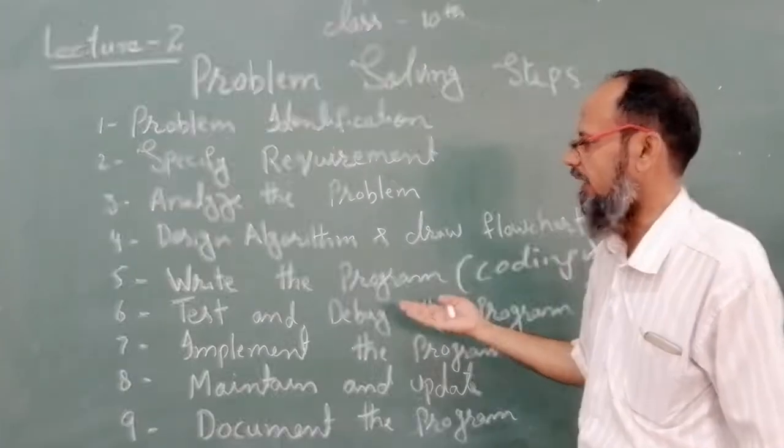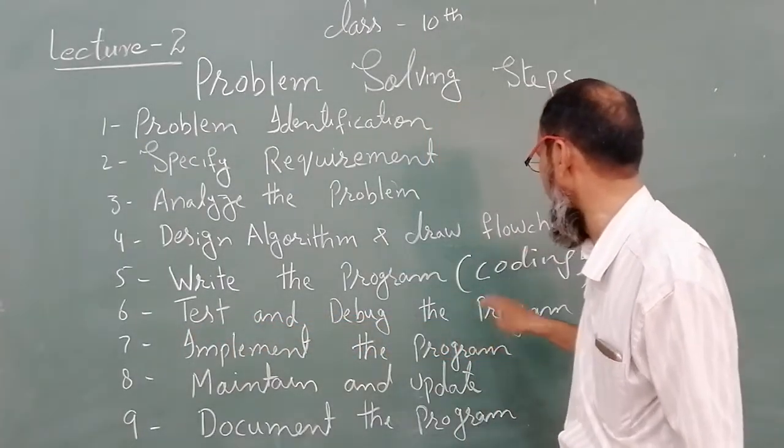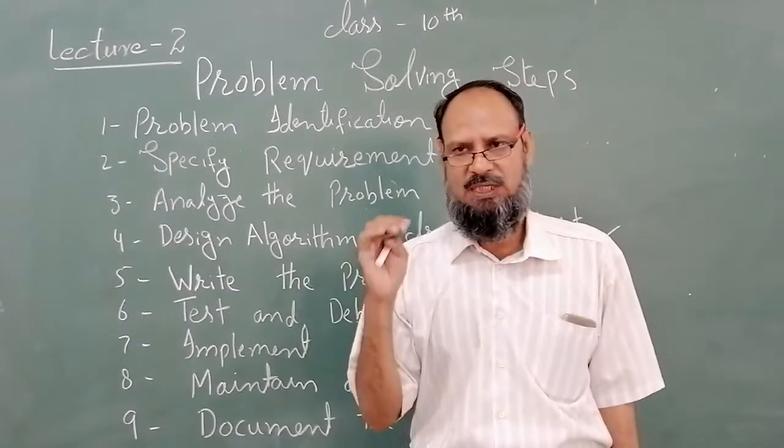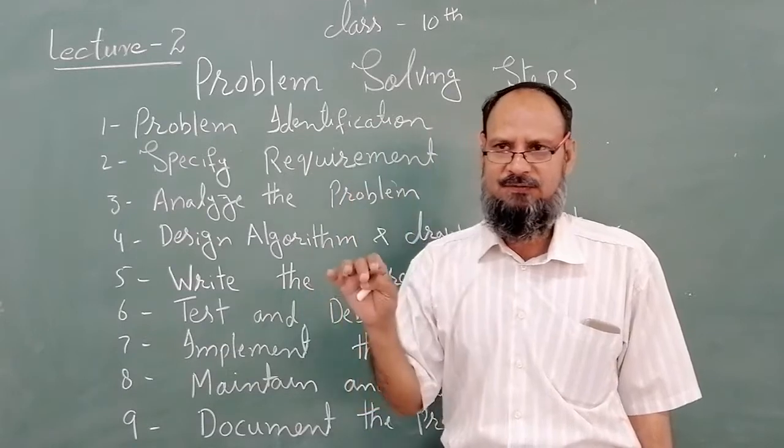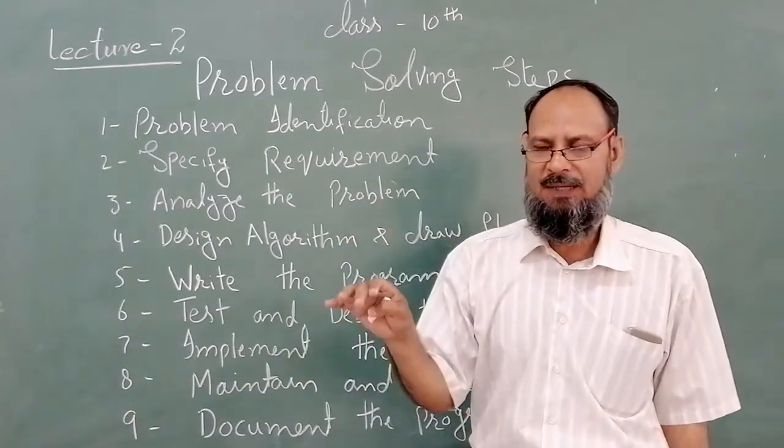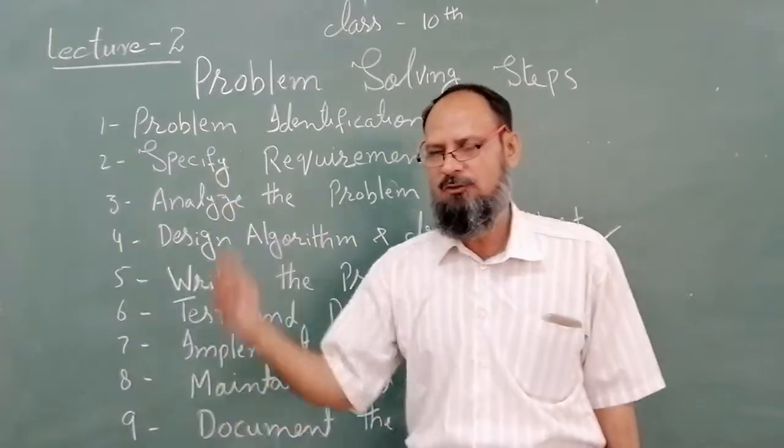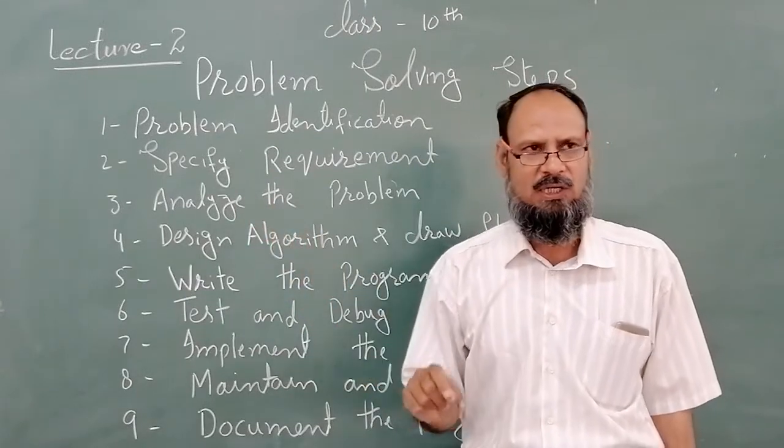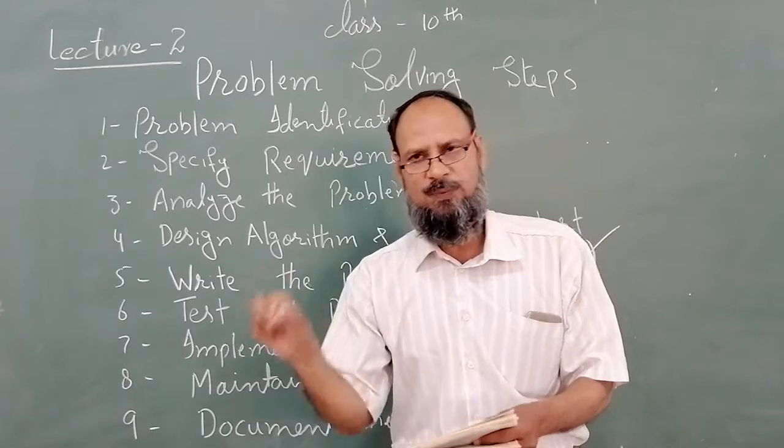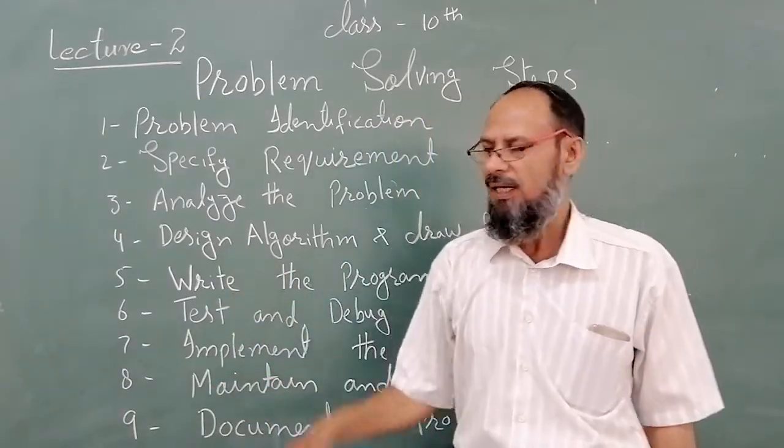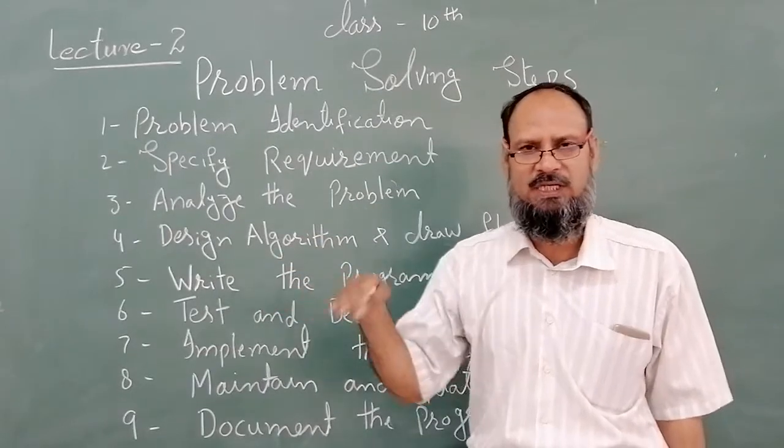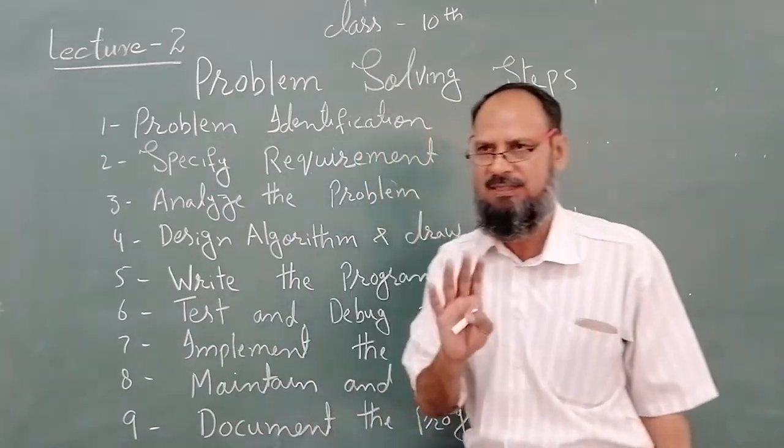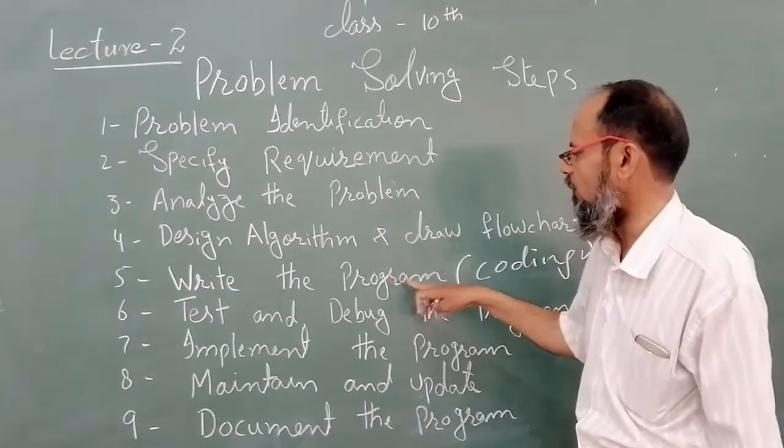Number six, the next point is test and debug the program. After writing the program, the programmer runs it, executes it, and takes dummy data. Dummy data means it's not real data. For example, if we sold two computers, we record the data: computer sale serial number, item name, price, quantity. Even though we didn't actually sell it, it's dummy data. We enter it and check the results to see if the output is correct.